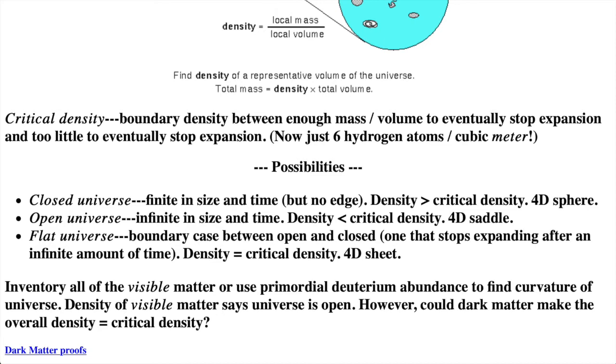Our cosmic inventory of all the stuff we can see and our measurements of the primordial deuterium both say that the visible matter is 15 to 20 times too little mass to close the universe. What about the dark matter?